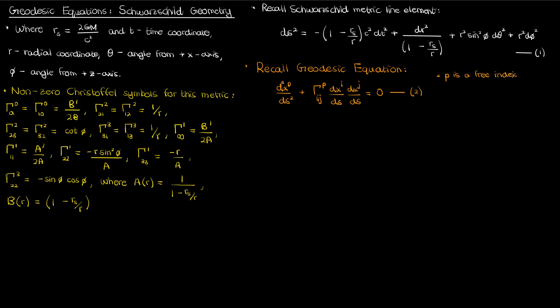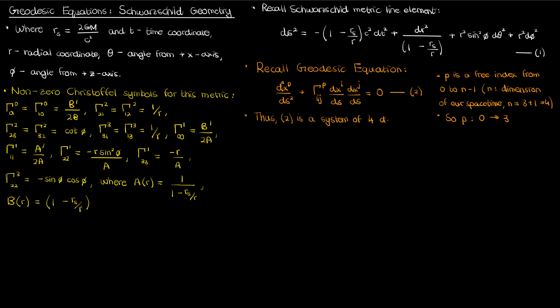The p in equation 2 is a free index from 0 to n-1, where n is the dimension of the space-time. In relativity, n is 4, so p varies from 0 to 3. I use index 0 for the time coordinate for consistency. The geodesic equation is actually a system of four differential equations, one for each coordinate: x⁰ = t, x¹ = r, x² = θ, and x³ = φ in Schwarzschild geometry.